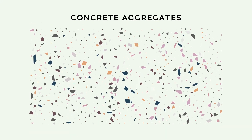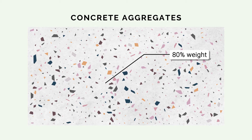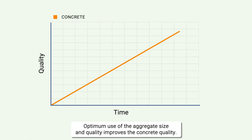Gravel, stone and sands form the granular structure, which must have its voids filled as completely as possible by the binder glue. They make up approximately 80% of the weight and 70-75% of the volume. Optimum use of the aggregate size and quality improves the concrete quality.